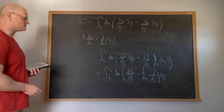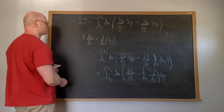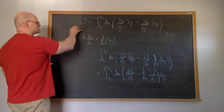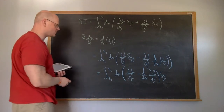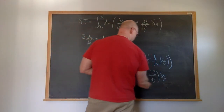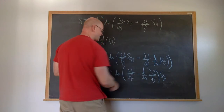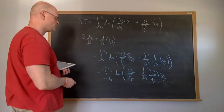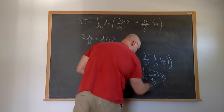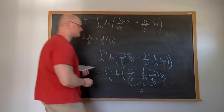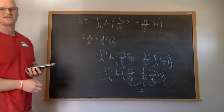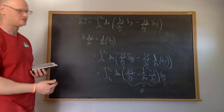For this thing to be equal to zero — because our condition is that whatever extremizes this will cause the variation to go to zero — since this is an arbitrary variation, what has to be inside the integrand must be equal to zero. This gives us our Euler equation.